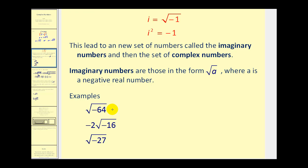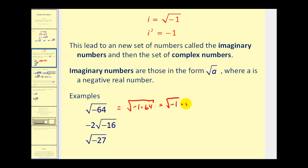Here are three examples of imaginary numbers. We can simplify these very similar to how we simplify square roots, except now we have a new definition to deal with the negative. So we could rewrite this as the square root of negative 1 times 64, which is equal to the square root of negative 1 times the square root of 64. By definition, this is equal to i, and the square root of 64 is equal to 8, so this simplifies to the imaginary number 8i.